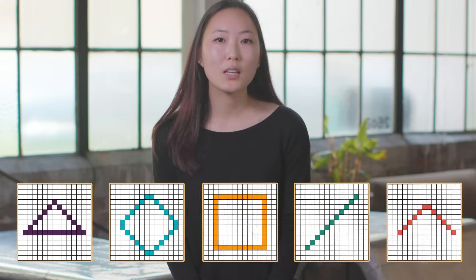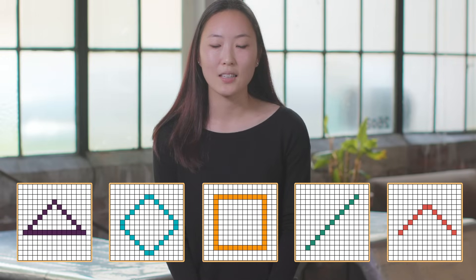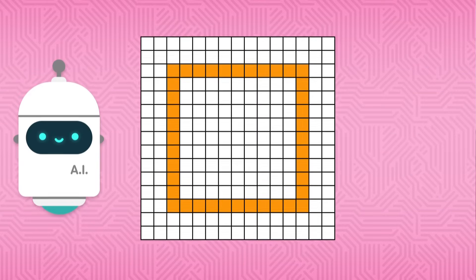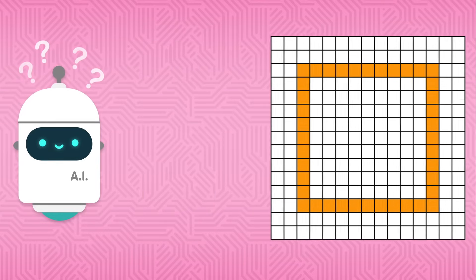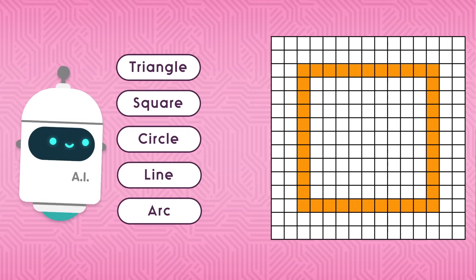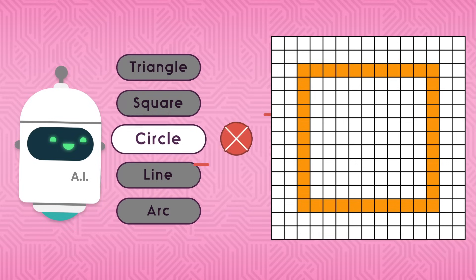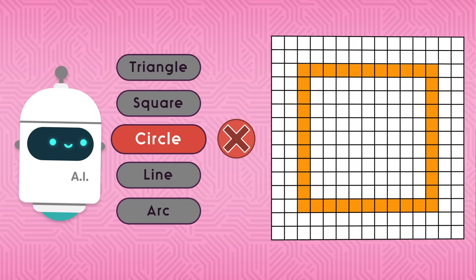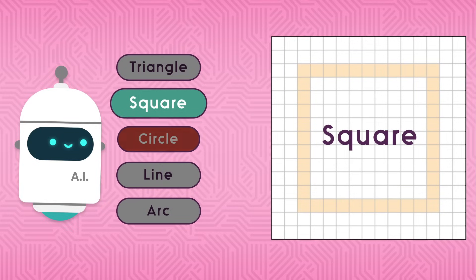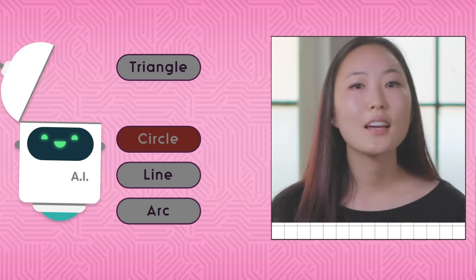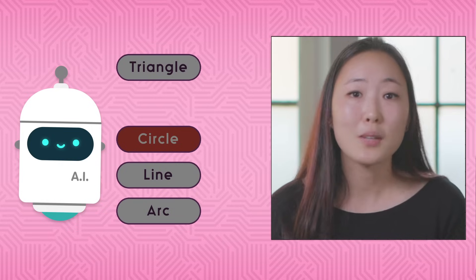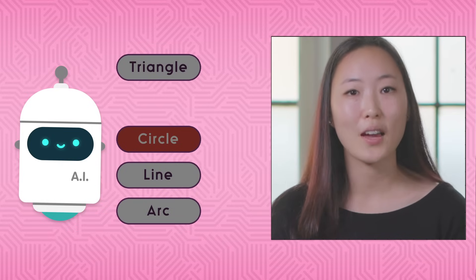Here are some simple shapes we can use to train the computer to see. At first, the computer is completely clueless and makes a totally random guess from a preset group of options, and it guesses wrong. But that's okay, because this is where the computer learns. After it makes a guess, the computer is shown the correct answer. It's like learning with flashcards. Sometimes you have to get it wrong before you get it right.